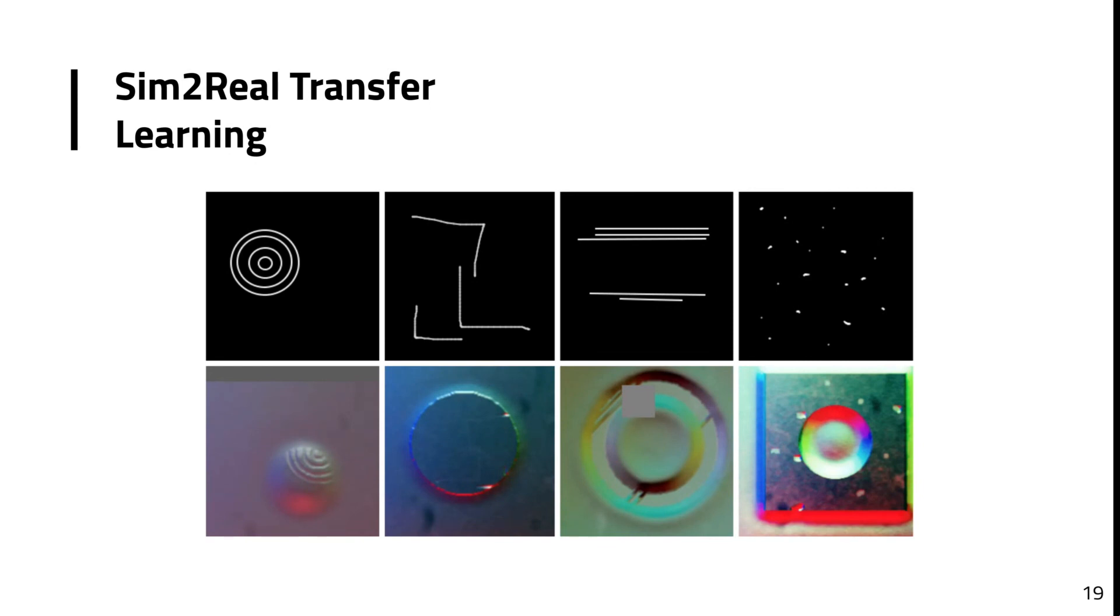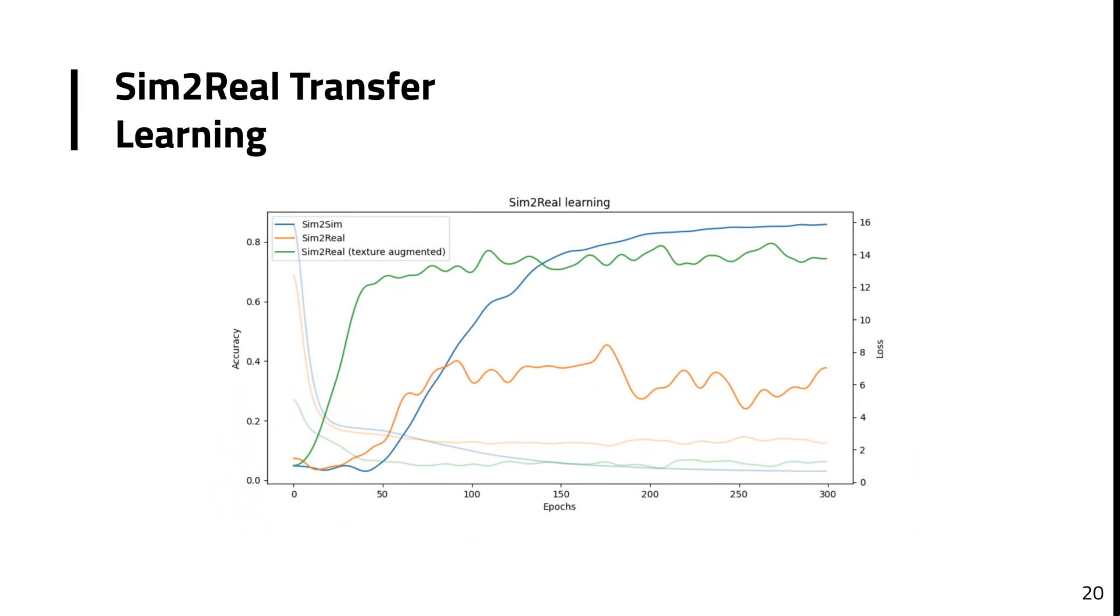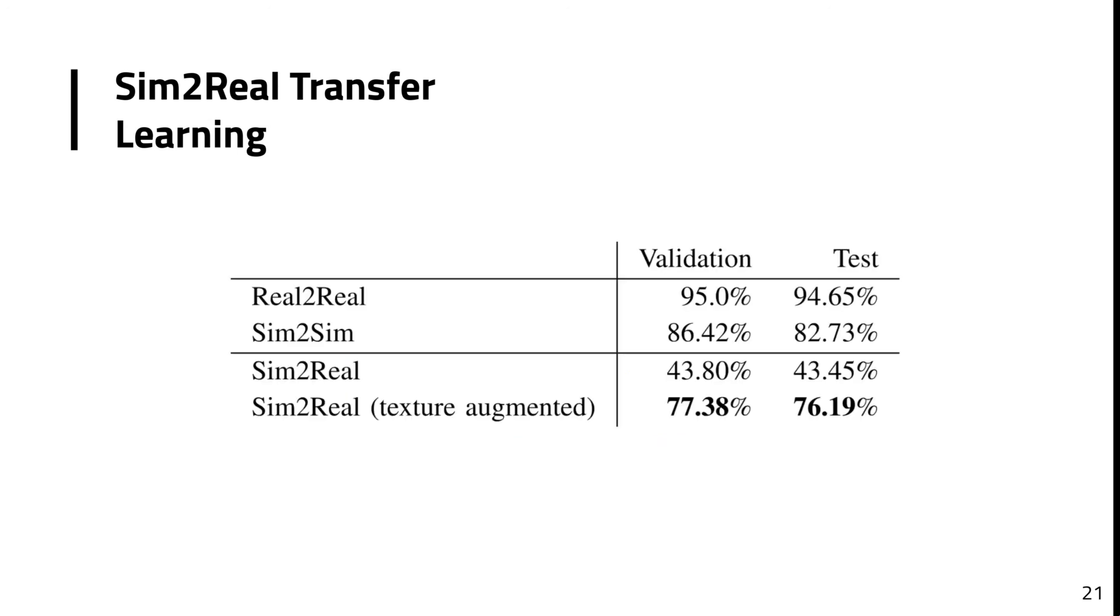The model used is a convolutional neural network optimized by minimizing the categorical cross-entropy loss function. For the sim to real experiments, the CNN is trained using the training split of the synthetic dataset and is evaluated on the validation and test splits of the real dataset. The validation results are used for choosing the best weights, while the test split is only used for final benchmarking. Here you can see the significant improvement introduced by the data augmentation scheme. In blue, the sim to sim baseline, in orange, the sim to real without the texture augmentation, and in green, the sim to real with texture augmentation. And here, the final reported results of 76.19% versus 43.45% classification accuracy in the test split.